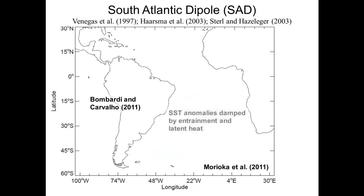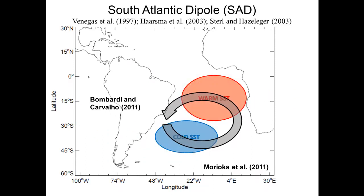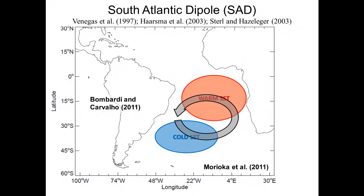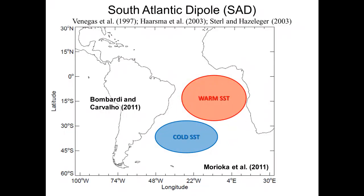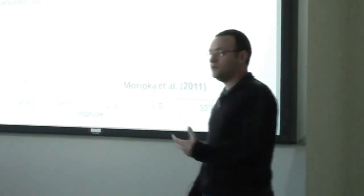In the opposite phase, the circulation in the atmosphere weakens, and we see the opposite in the sea surface temperature, associated with dry conditions.